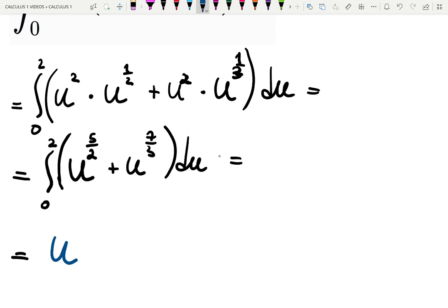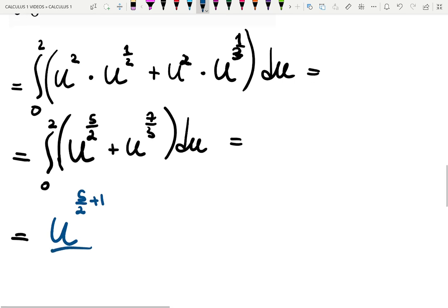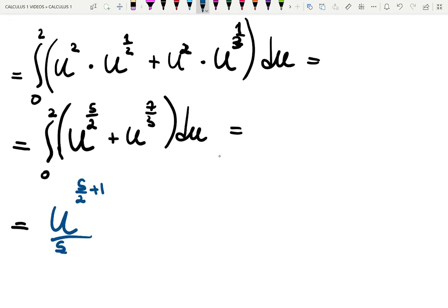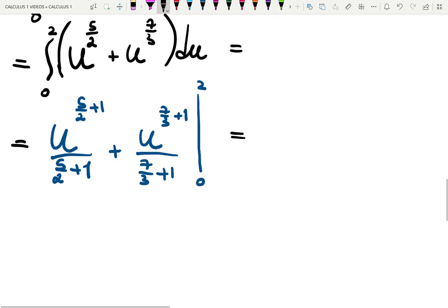Now it is going to be u, 5 over 2 plus 1, over whatever that number is, 5 over 2 plus 1. So you do not have to calculate it once, which is convenient. Again, plus u, 7 over 3 plus 1, over 7 over 3 plus 1. Should I write down plus c? No. Put a bar and write down 0 and 2. Because we are working with the definite integral, we need limits of integration.